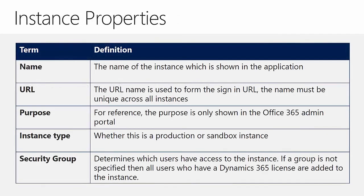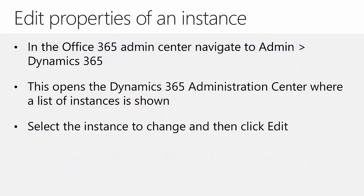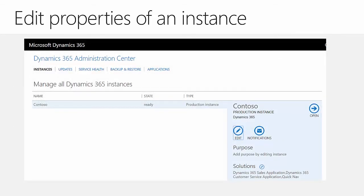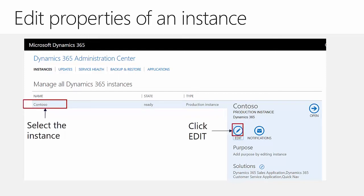In addition to instance type and security group, each instance has its own name, unique URL, and a description of its purpose. These settings are managed in the Office 365 Admin Center. Navigate to the Admin section, open the Dynamics 365 Admin Center, and you'll see a list of instances available within the subscription. Select the desired instance and click Edit to access and update its properties.